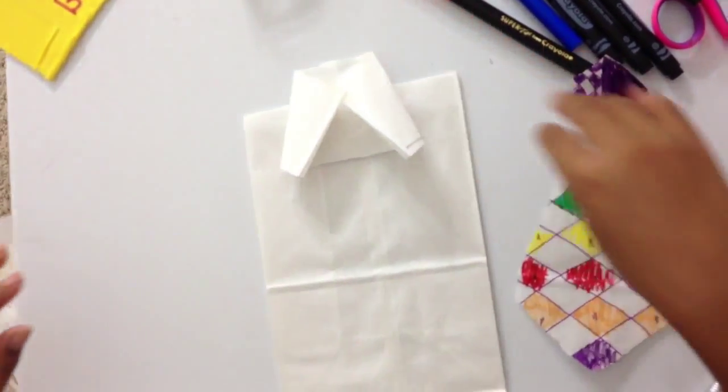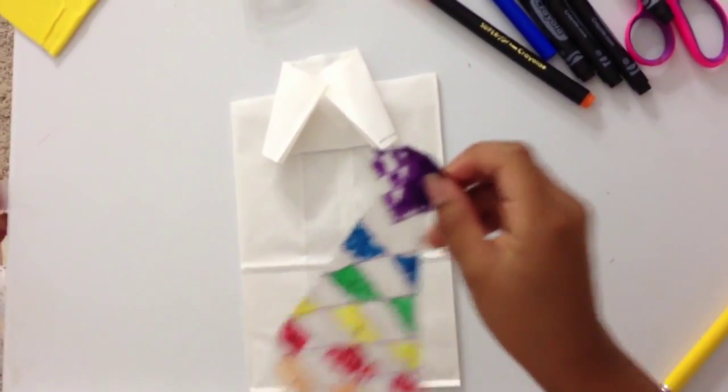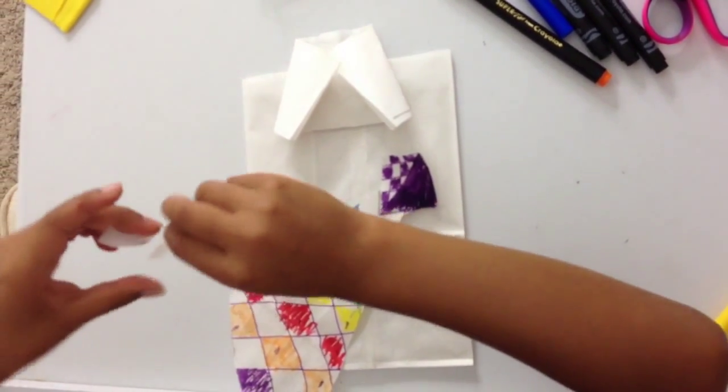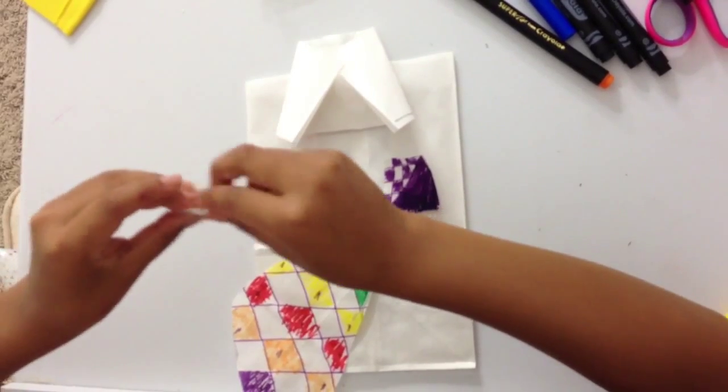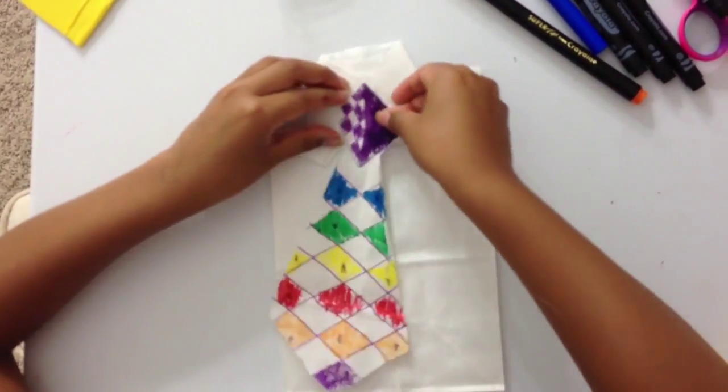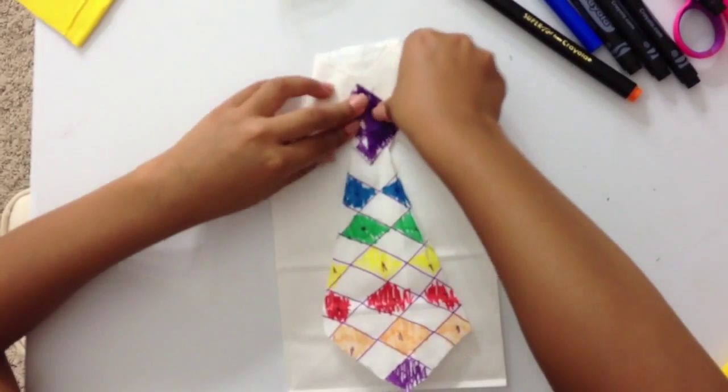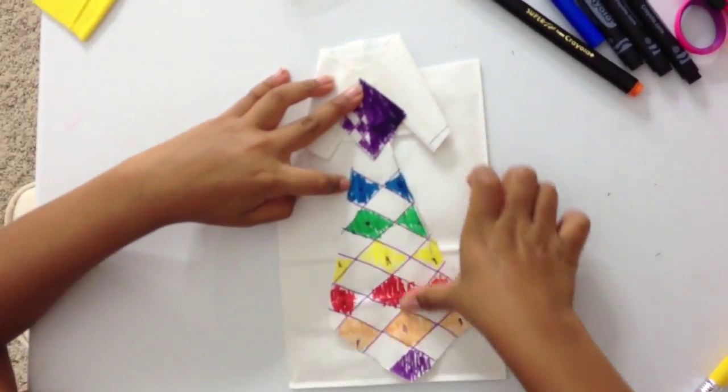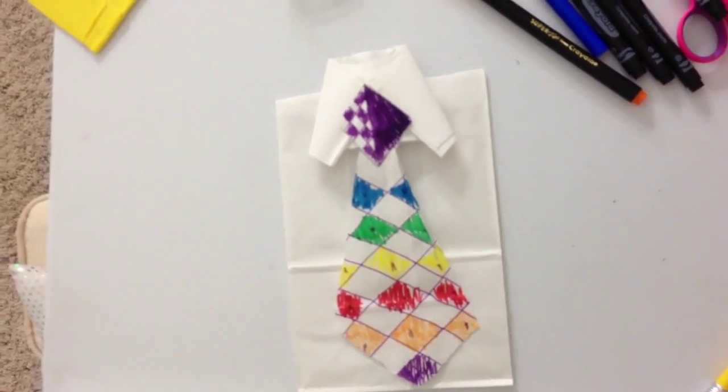Like this. Now take your tie and tape it to the collar like this, and this is what it should look like.